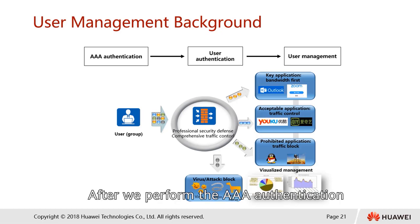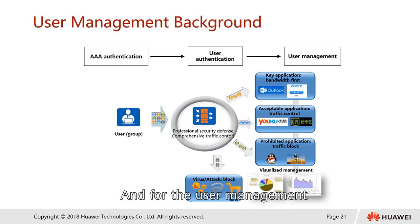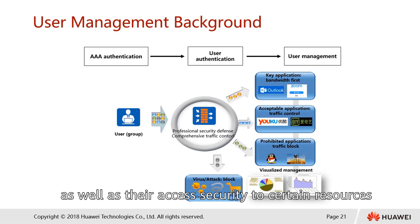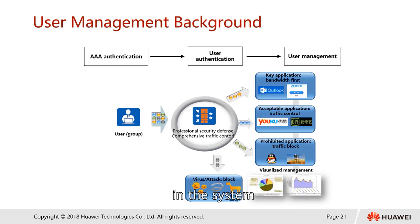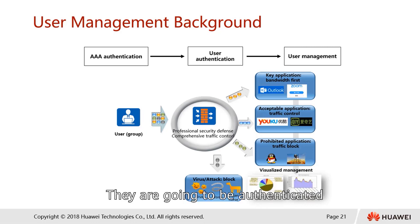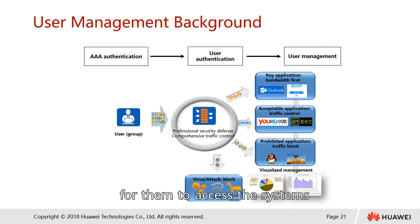After we perform the AAA authentication, we also talk about user authentication. For user management, the user has to be categorized into different user groups based on their role as well as their accessibility to certain resources in the system. A user group is required to classify different users — they are authenticated and assigned with different privileges to access the system in accordance with the purpose of security.